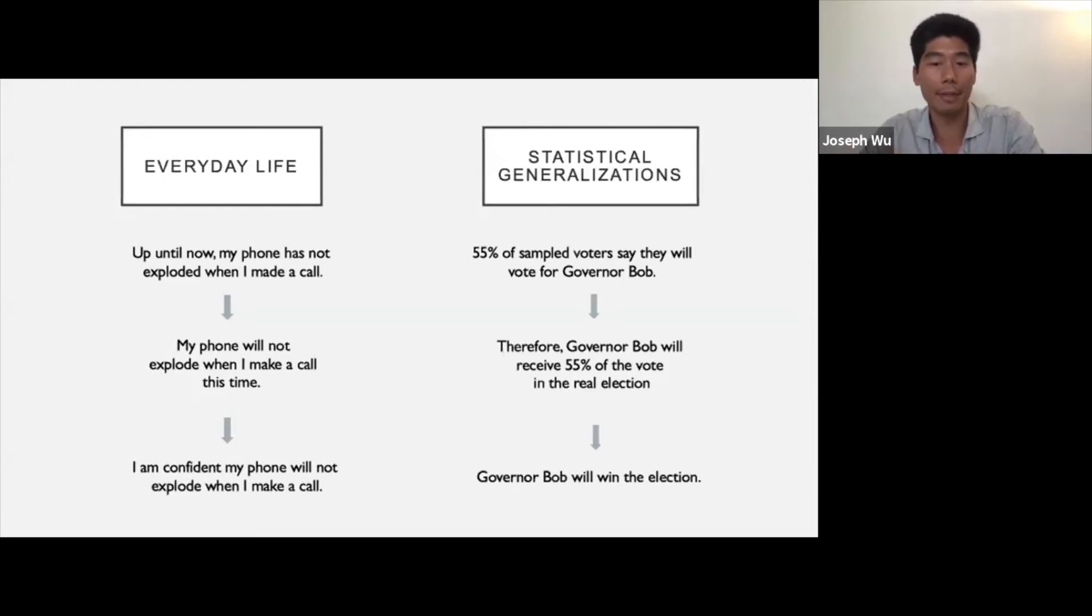Here, it is important to carefully assess the assumptions that these inferences rely upon to be true. For example, in the first inference, from 55% of sampled voters say they will vote for Governor Bob to therefore Governor Bob will actually receive 55% of the vote, we need to ask whether the voters sampled were actually representative of the general population. We need to ask whether enough people were sampled. And we also need to consider whether people will change their mind about who they're going to vote for between being sampled and the actual election. Notice that whether the inductive inference holds true will depend on all of these implicit assumptions.